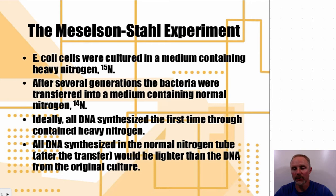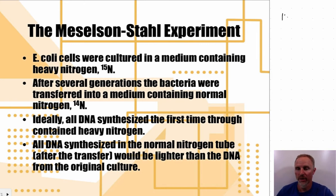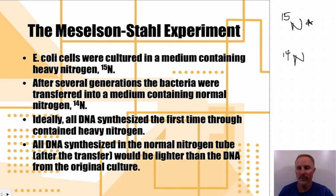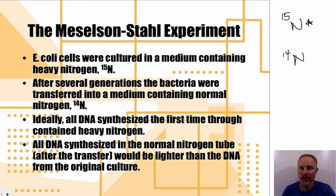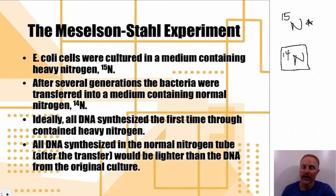E. coli cells were cultured in a medium containing heavy nitrogen for a long period of time. There are two common isotopes of nitrogen: nitrogen-15 and nitrogen-14. Neither is radioactive; they're stable isotopes. The E. coli cells were grown in nitrogen-15 for many generations, so all their biomolecules — including DNA — contained only nitrogen-15. After several generations, the bacteria were then transferred to a medium containing the lighter nitrogen-14.